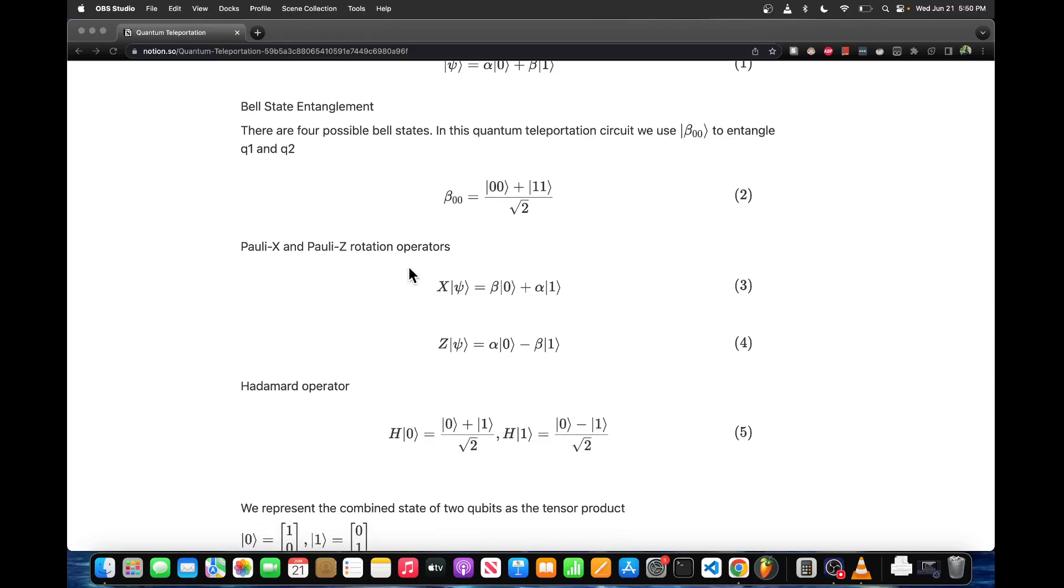Next we have the Pauli X and Pauli Z rotation operators. The Pauli X operator acting on a wave state switches the coefficients for the base state vectors, and the Z operator negates the one basis state vector. These operators are their own inverses, so if you apply the X operator twice you get the original wave state.